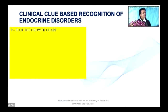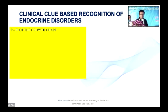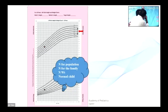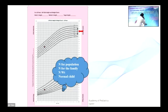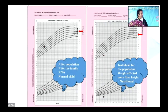The first clue a pediatrician can get is from the growth chart. Please plot the growth chart — this has been re-emphasized in multiple talks. When a child's growth is below the third percentile for both weight and height, with weight at a much lower percentile compared to height, you know that this child is growth deprived.